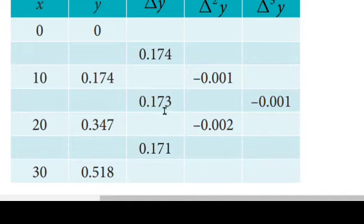0.173 minus 0.174 gives negative 0.001. Next, 0.171 minus 0.173 gives negative 0.002.